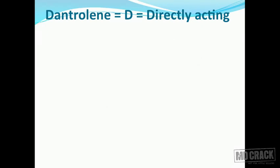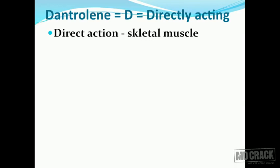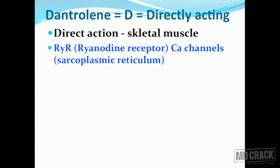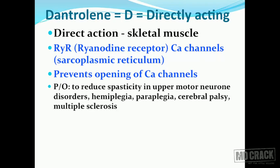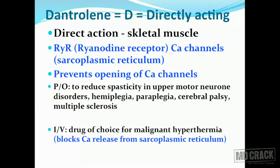The last group of peripherally acting agents is directly acting agents - that's dantrolene. It has a direct action on the skeletal muscle and acts on the ryanodine receptor (RYR) calcium channels in the sarcoplasmic reticulum. It prevents the opening of the calcium channels and can be given by oral route to reduce spasticity in conditions like upper motor neuron paralysis, hemiplegia, paraplegia, cerebral palsy, and multiple sclerosis. As we just discussed, it is the drug of choice for malignant hyperthermia because of its property of blocking calcium release from the sarcoplasmic reticulum.